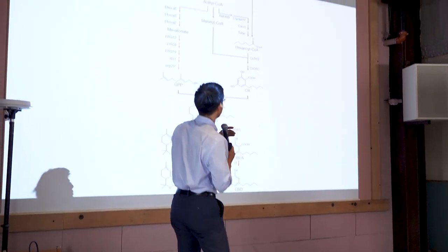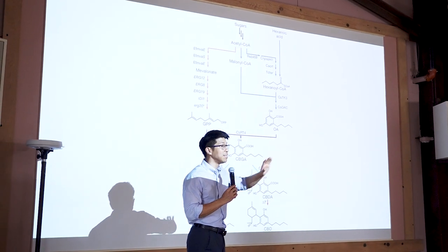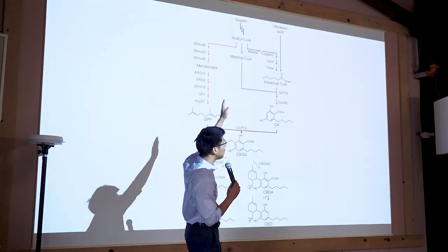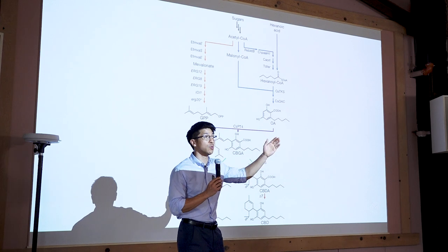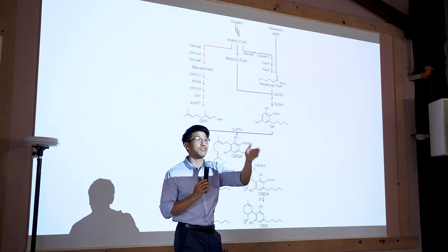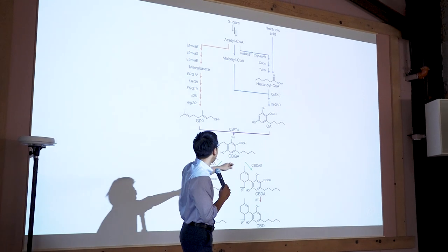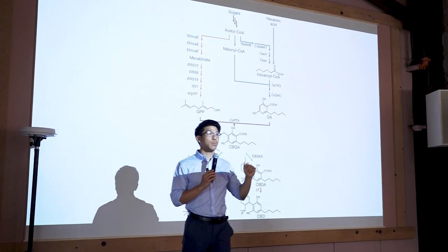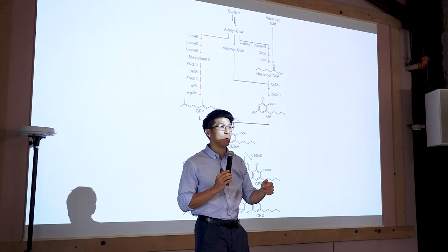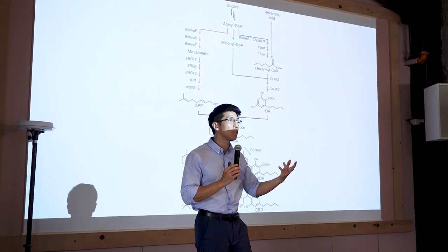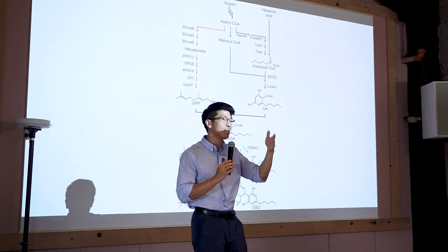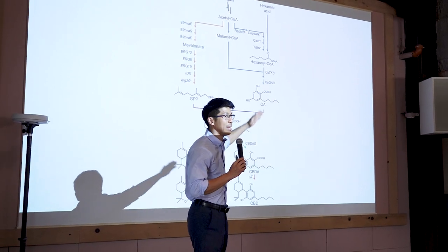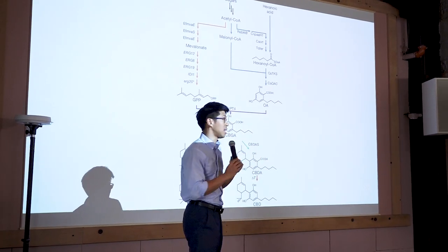Don't worry about the details — literally don't. There are so many enzymatic pathways and intermediate compounds, but just know that eventually that sugar, through a series of steps A, B, C, D, E, F, G, Z, is made into CBG. CBG is the precursor to many cannabinoids. The way you can remember that is it's the OG — the original cannabinoid — that is then made into THC, CBD, et cetera.